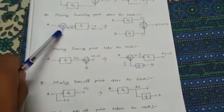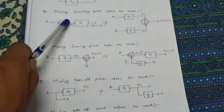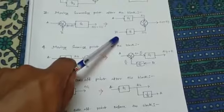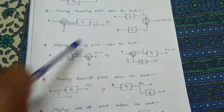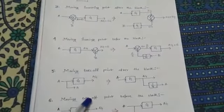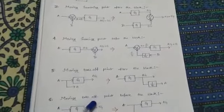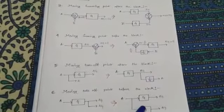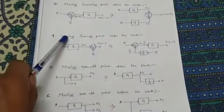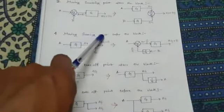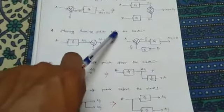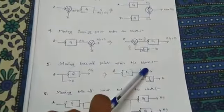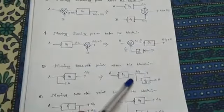To summarize: for a summing point moved after the block, we multiply the signal by the system gain g. For a takeoff point moved before the block, we also multiply by g. Whereas for a summing point moved before the block, and for a takeoff point moved after the block, we divide by the system gain g.